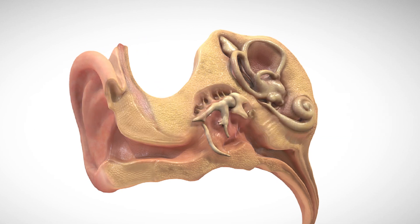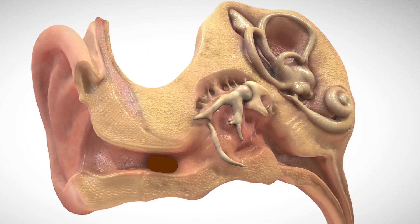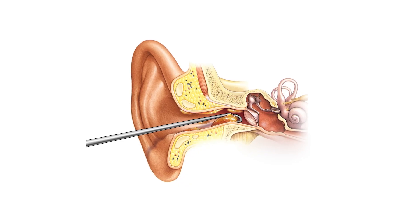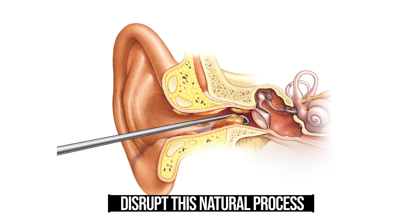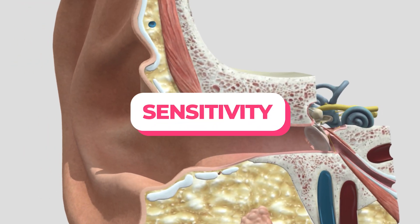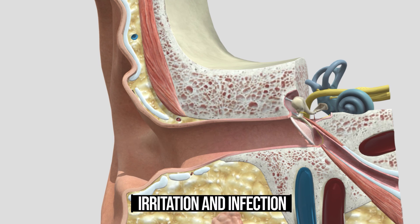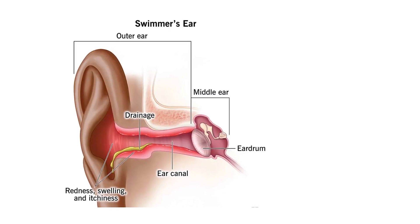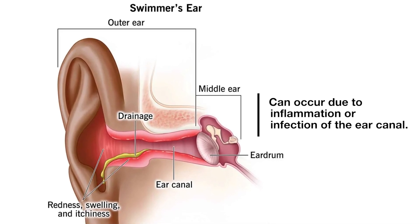Normally, the ear canal is self-cleaning. Earwax and debris gradually move out of the canal due to the movement of the jaw — like when chewing — eventually drying up and falling out. Over-cleaning or using inappropriate objects can disrupt this natural process and lead to problems like impaction, irritation, or infection. The skin in the ear canal is thin and sensitive, making it susceptible to conditions like otitis externa, or swimmer's ear, which can occur due to inflammation or infection of the ear canal.